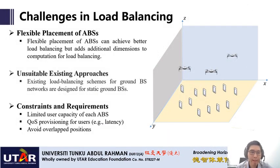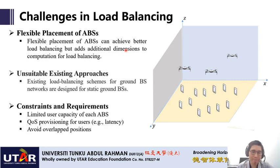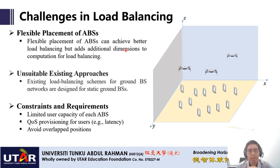There are a number of challenges in load balancing. The ability of aerial base stations to hover in the air adds additional dimensions—namely the positions of the aerial base stations—as new variables to achieve load balance. In traditional cellular networks, existing load balancing schemes focus on user association, but for aerial base station networks, load balancing must consider both user association and the positions of the aerial base stations, which adds additional dimensions to the computation.